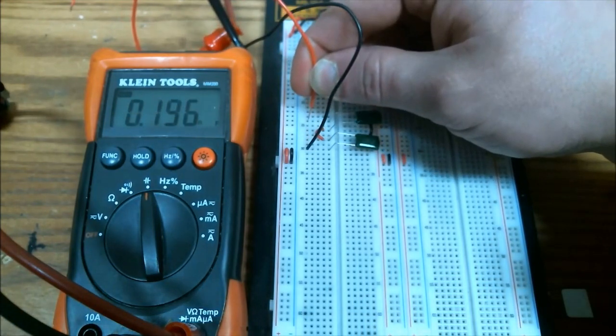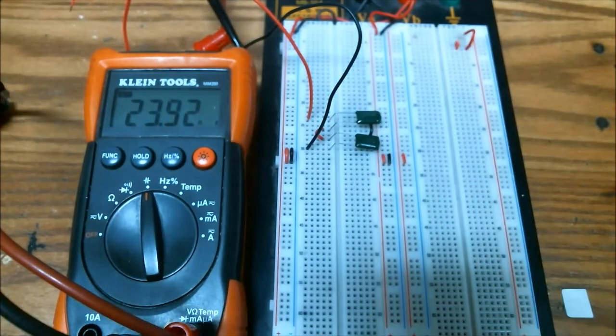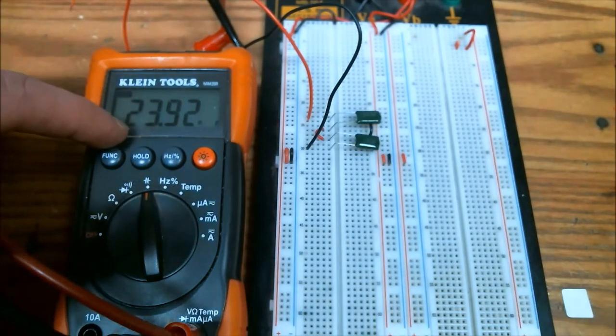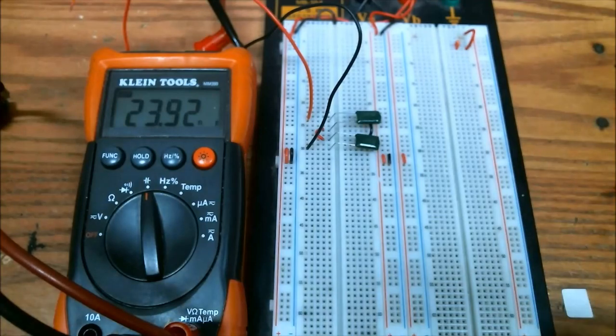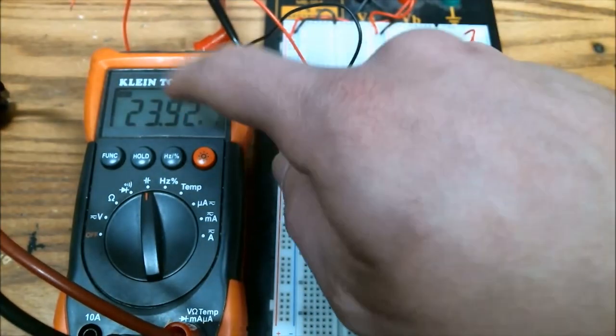So if I measure the entire capacitance, so the two capacitors in series, we can see that the capacitance is now 23.92 nanofarads. So pretty close to what I was calculating.